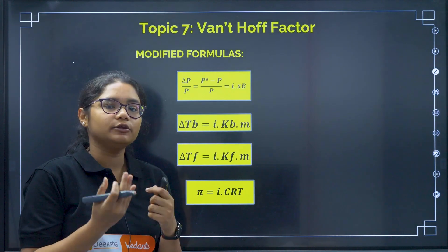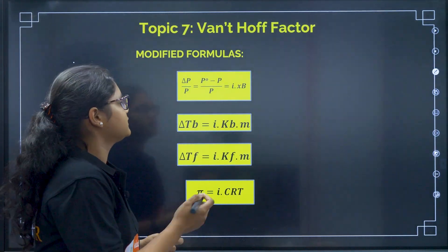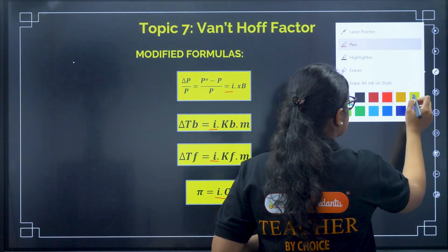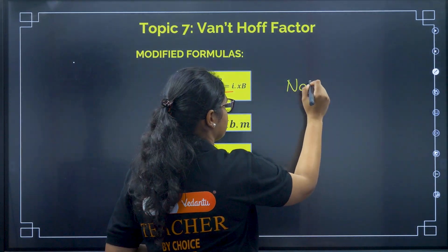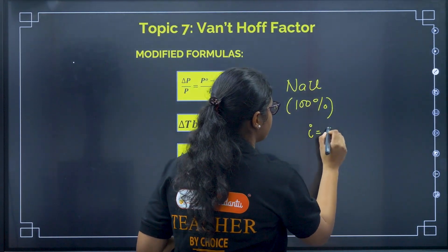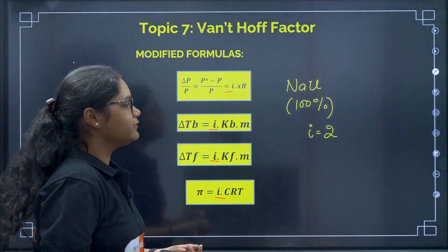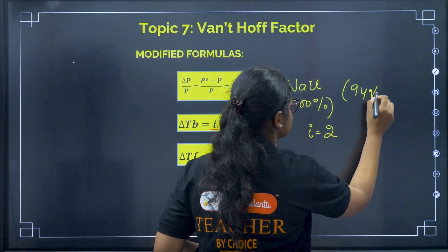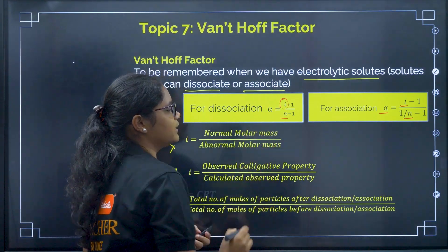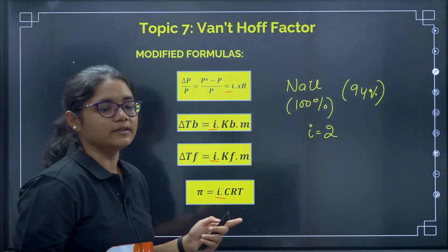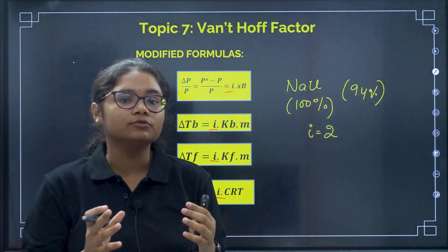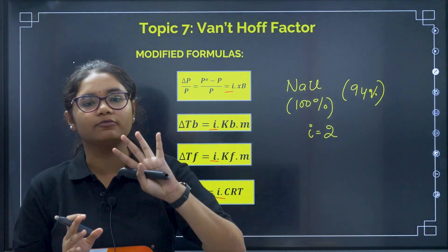It is very easy to solve numericals once you have learned colligative properties — you just add the factor I before all the formulas. If 100% dissociation is given, for example NaCl, I equals 2 directly. But if a percentage of dissociation is given, say 94%, you first calculate I using the formula, then substitute into the colligative property formulas. Give more importance to the colligative property formulas from all four colligative properties.